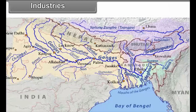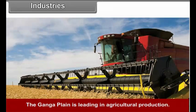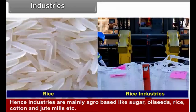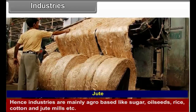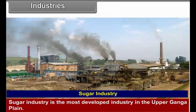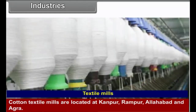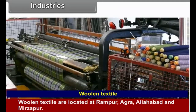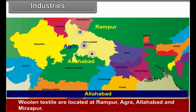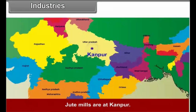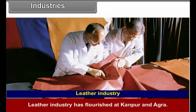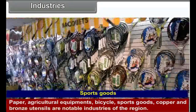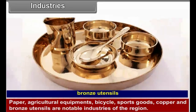Industries. The Ganga Plain is leading in agricultural production, hence industries here are mainly agro-based like sugar, oilseeds, rice, cotton and jute mills. Sugar industry is the most developed industry in the upper Ganga Plain. Cotton textile mills are located at Kanpur, Rampur, Allahabad and Agra. Woolen textiles are located at Rampur, Agra, Allahabad and Mirzapur. Jute mills are at Kanpur. Leather industry has flourished at Kanpur and Agra. Paper, agricultural equipment, bicycle, sports goods, copper and bronze utensils are notable industries of the region.